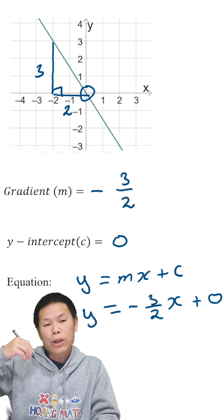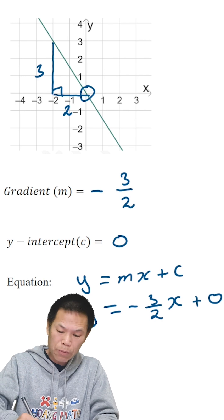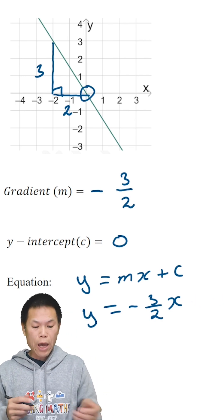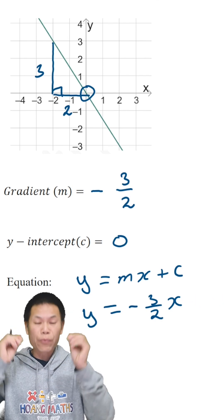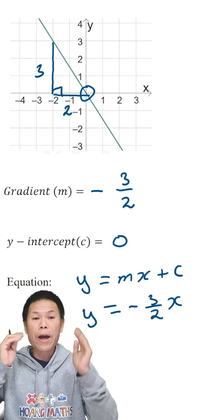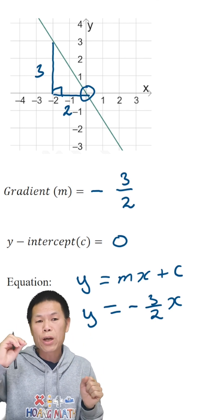Again, we do not need to write plus zero, so let me just clear this. So there you go, the equation of this straight line here is y equals negative three over two x.